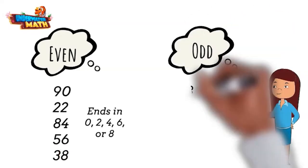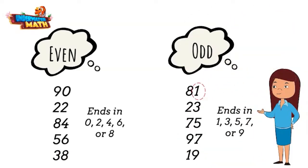A number is odd if it ends in an odd number, like 1, 3, 5, 7, or 9. We can use this idea to help us determine whether a number is even or odd.